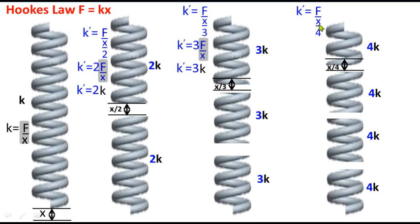This 4 is denominators denominators. It becomes numerator. k' is equal to 4F divided by x. And this F by x is k. As written here.